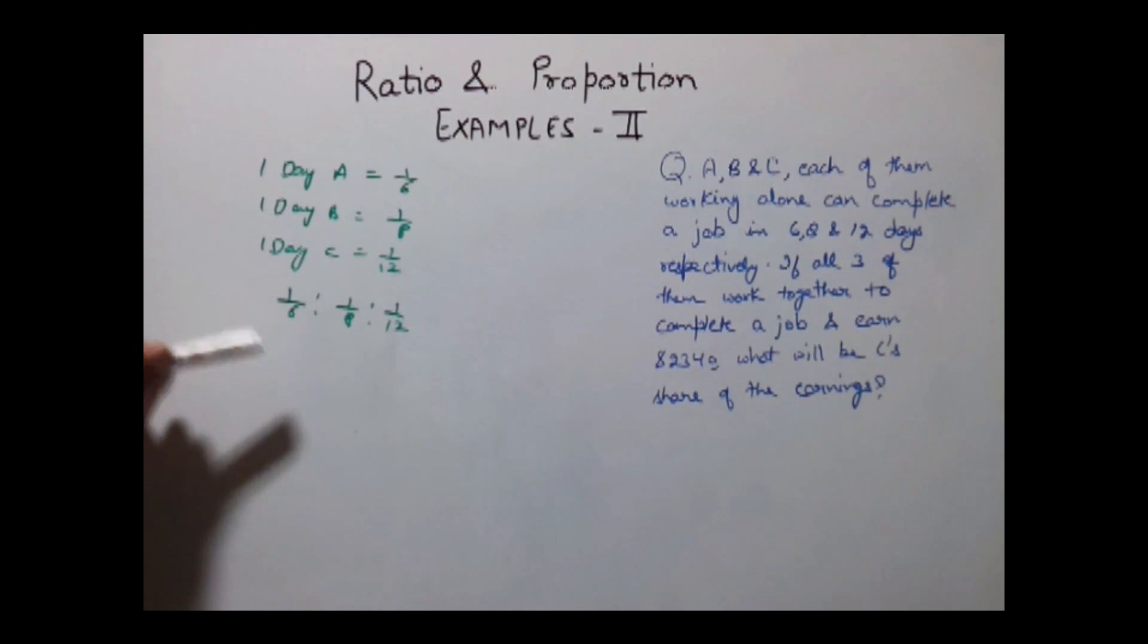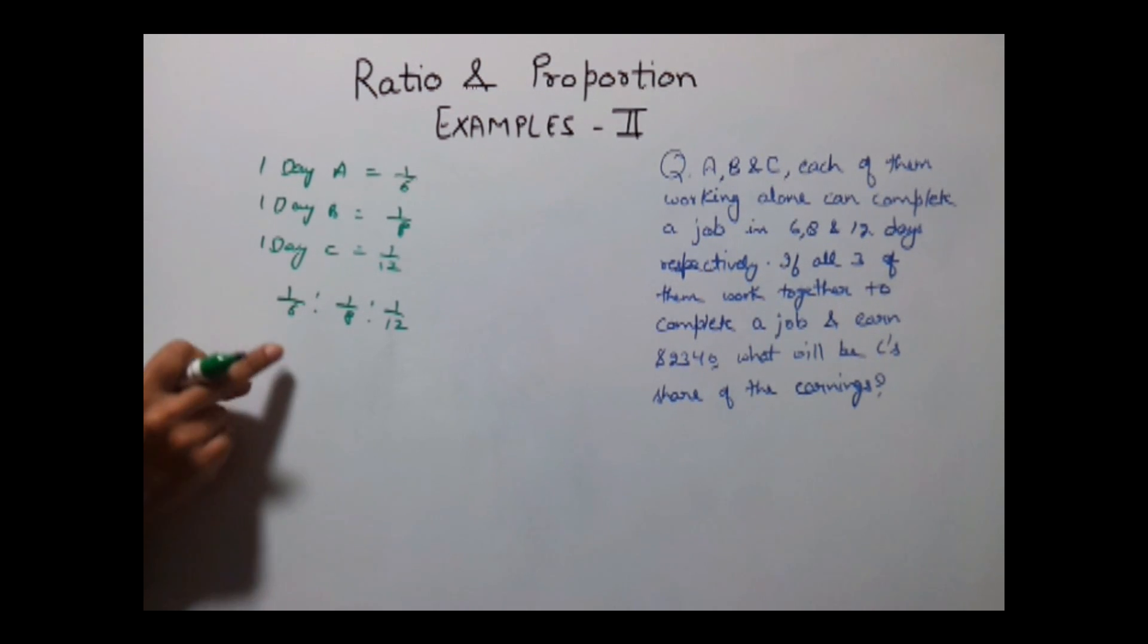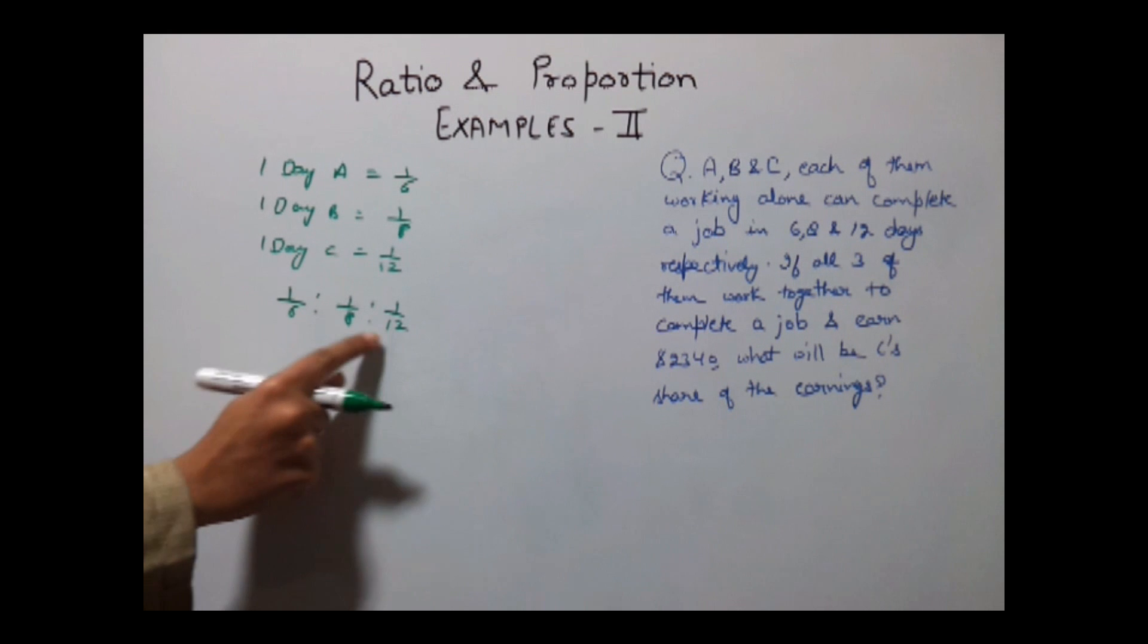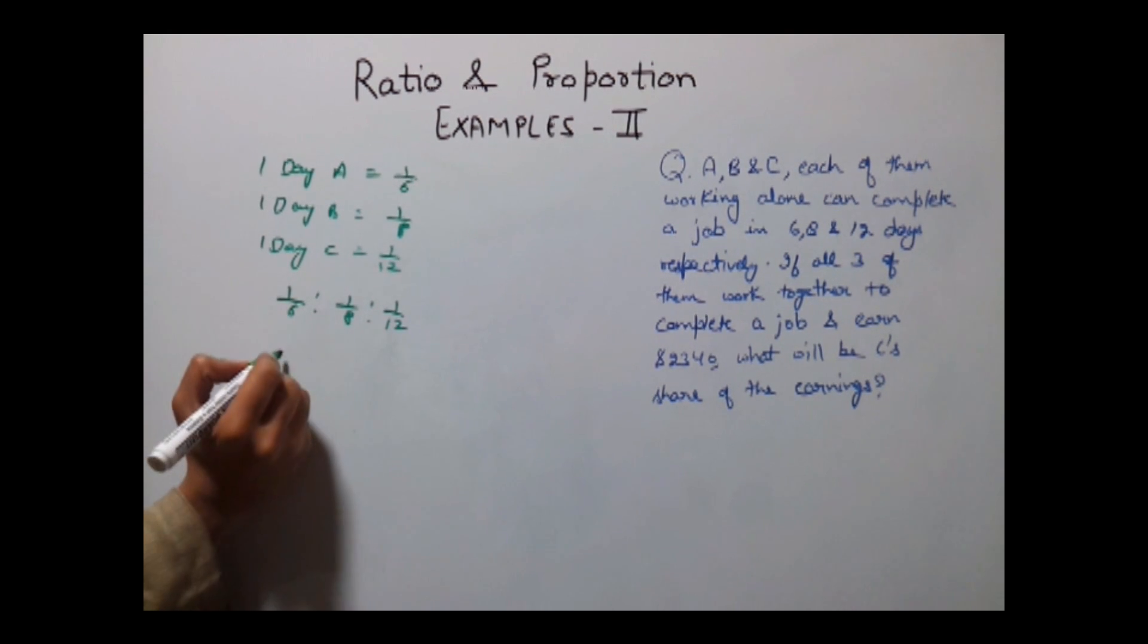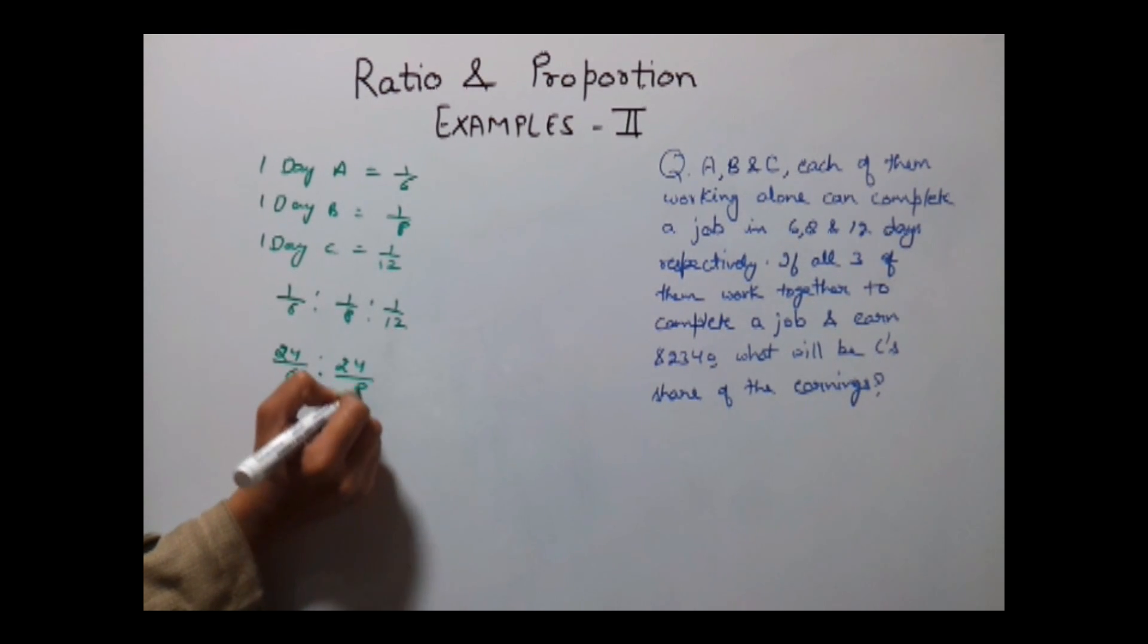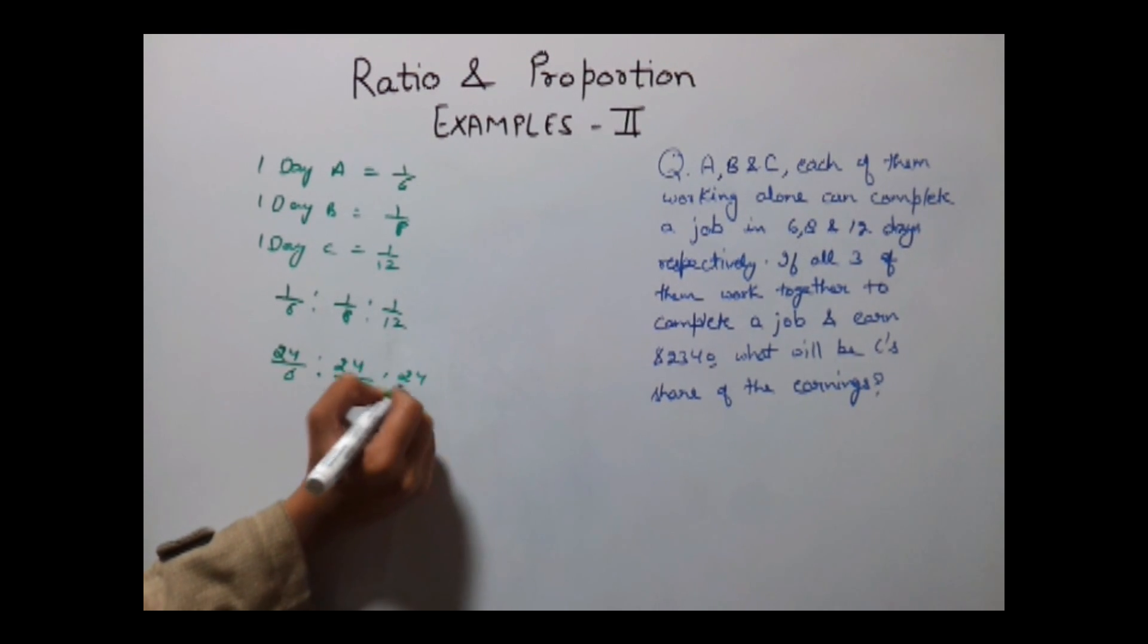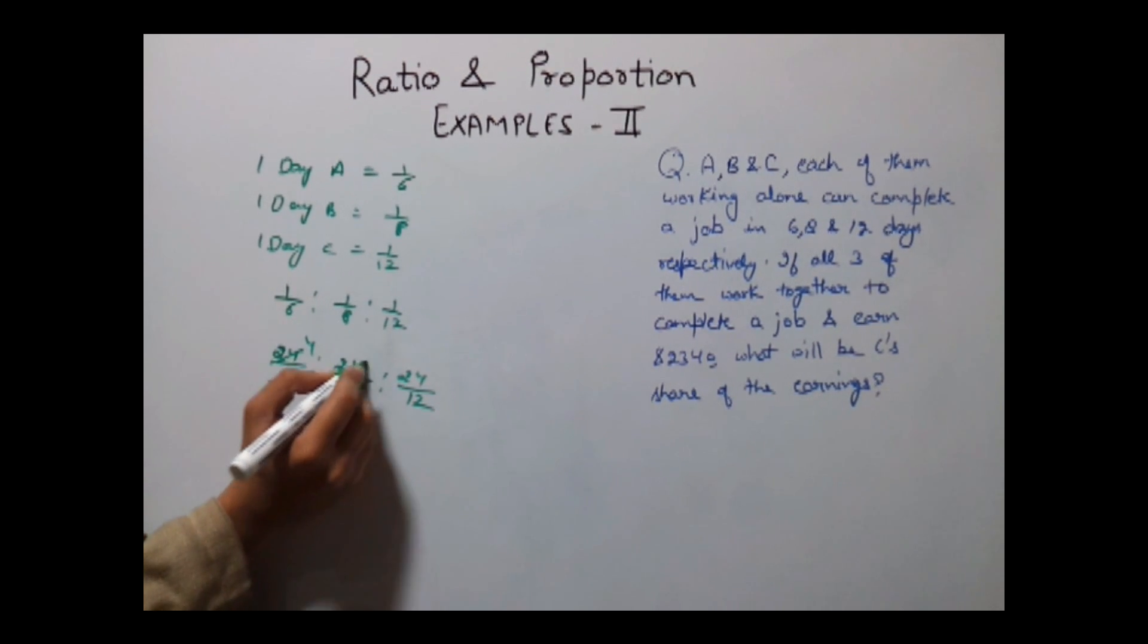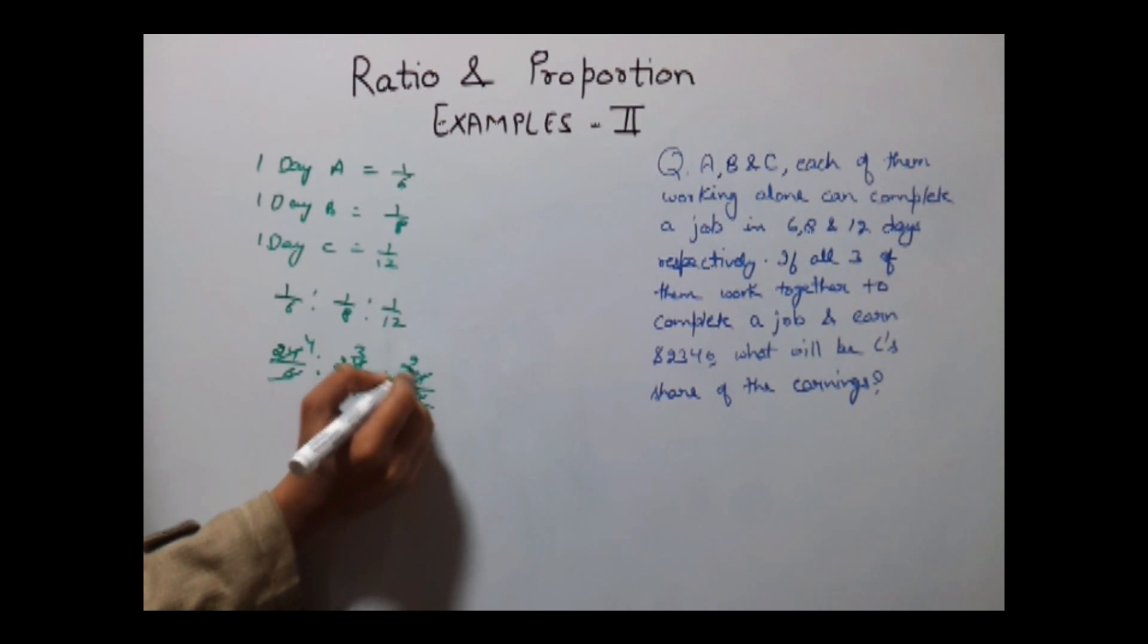We take the LCM of 6, 8 and 12 and multiply it. The LCM of 6, 8 and 12 is 24. Multiplying it we get 24/6, 24/8 and 24/12. So we get 4, 3 and 2.